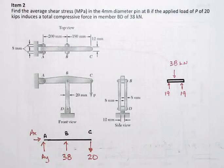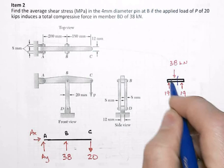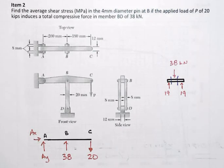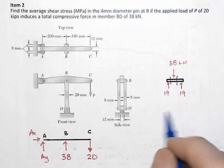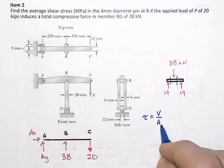And so this shear stress that we're asked to calculate is that shearing action that happens right through those two shear planes. And so tau is going to be in an average sense just that shear force divided by that area of the pin.